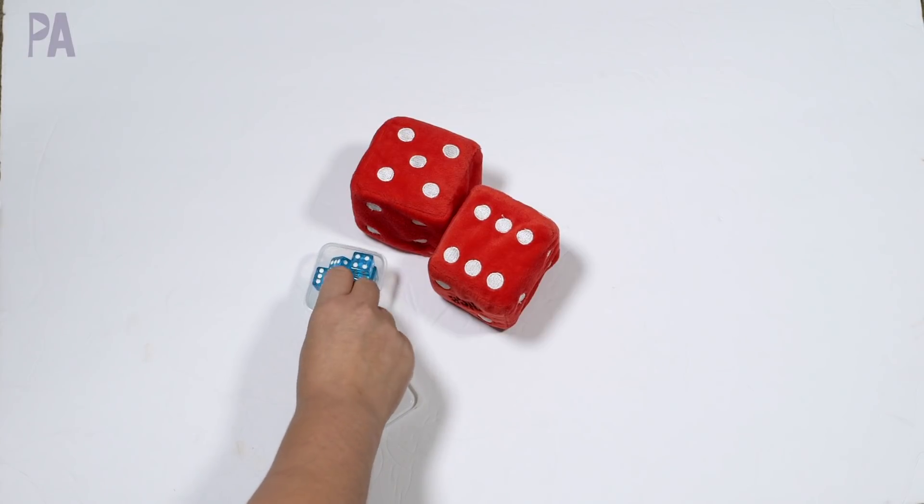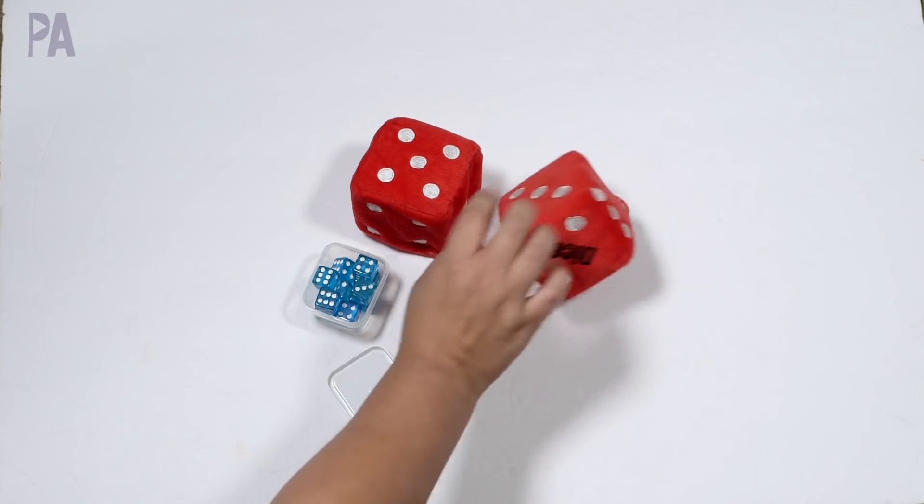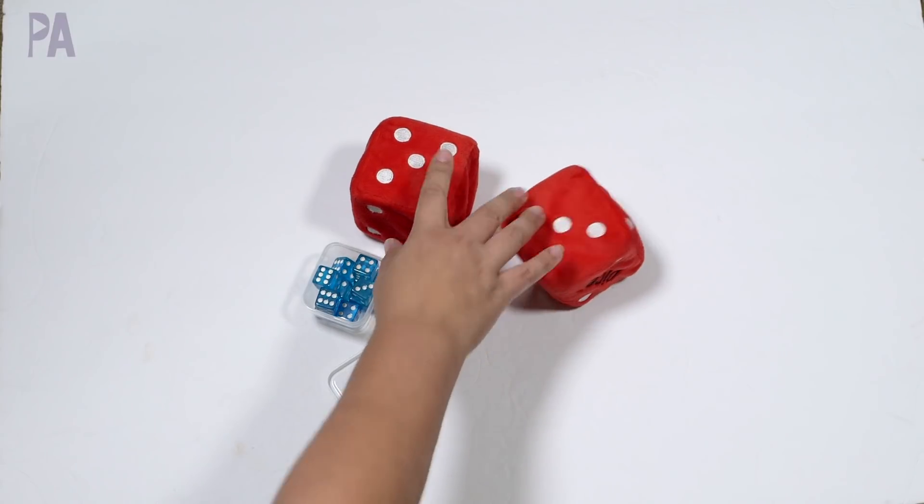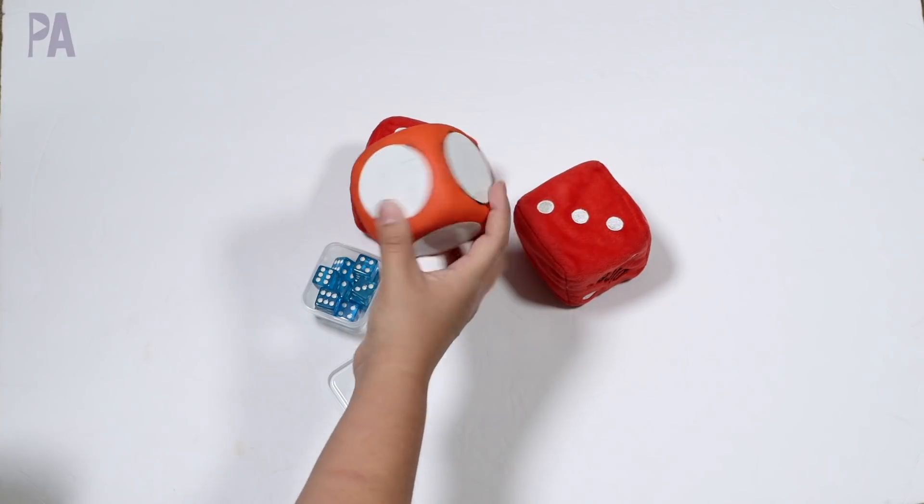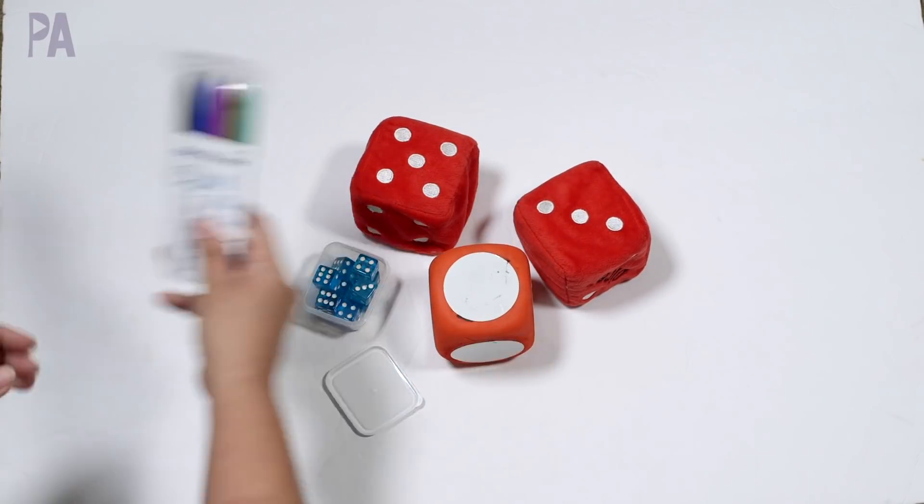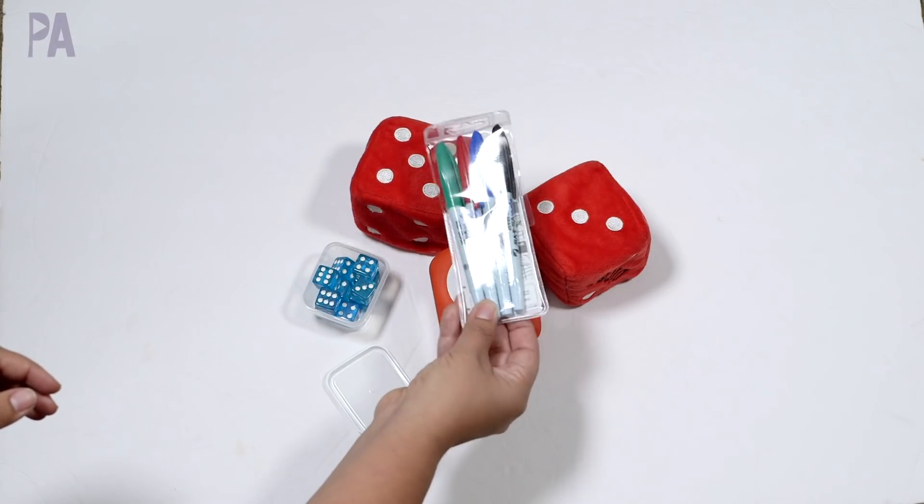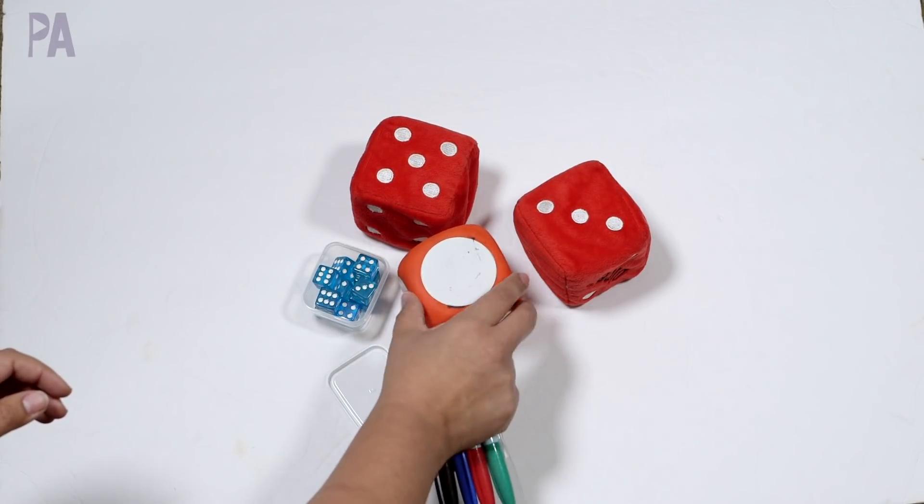If your child is of the age where they put things in their mouth, this could be a choking hazard. Then you can get some big ones like this that are soft and fuzzy and they're not going to hurt anyone. Or even the dollar store has these. And so you can get some wet erase markers. That's what these are, wet erase markers to write on here and it won't rub off like a dry erase.